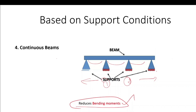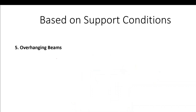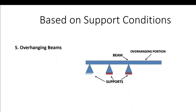The last type in this category is the overhanging beam. A beam which extends over more than two supports with either one or both ends extending beyond its supports is called an overhanging beam.